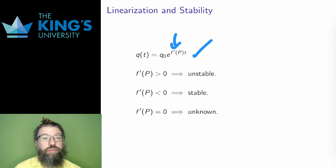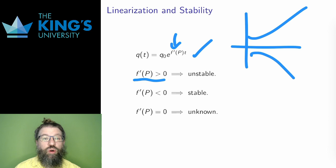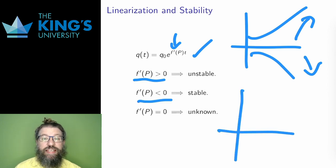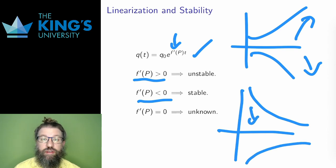If this number is positive, the linear approximation is exponential growth. This means that the function grows away from the steady state, indicating that the steady state is unstable. Similarly, if F prime of capital P is negative, then the function decays to zero, indicating movement back towards the steady state. And this works whether Q0 is positive or negative. This is approached from both sides.